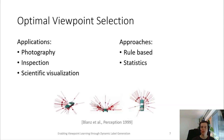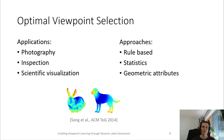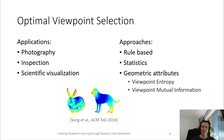Later work evaluated statistics by evaluating user studies or datasets of images. Recent work focuses on evaluating geometric attributes. This includes the most common viewpoint quality metrics, which are the viewpoint entropy and the viewpoint mutual information.